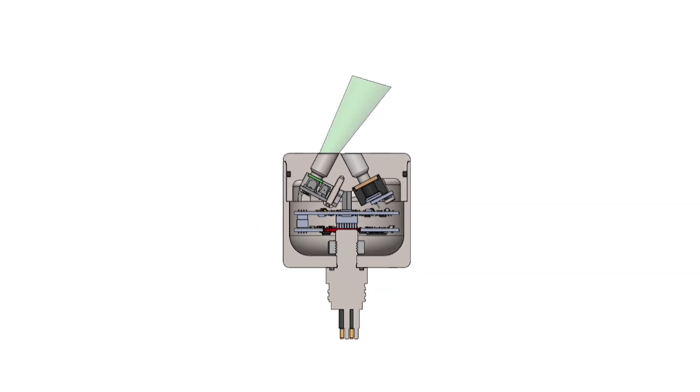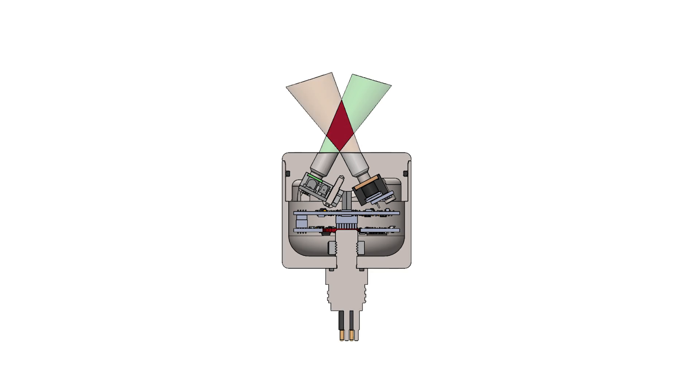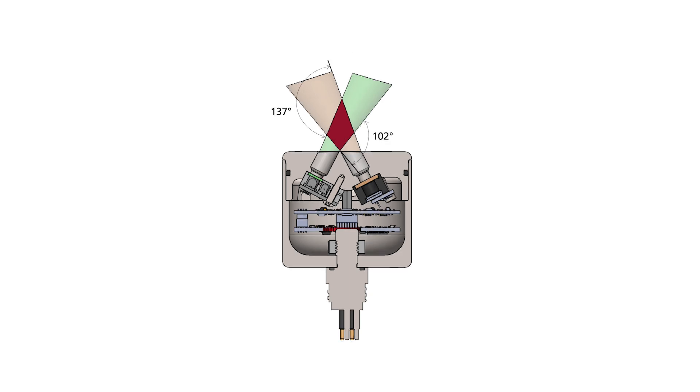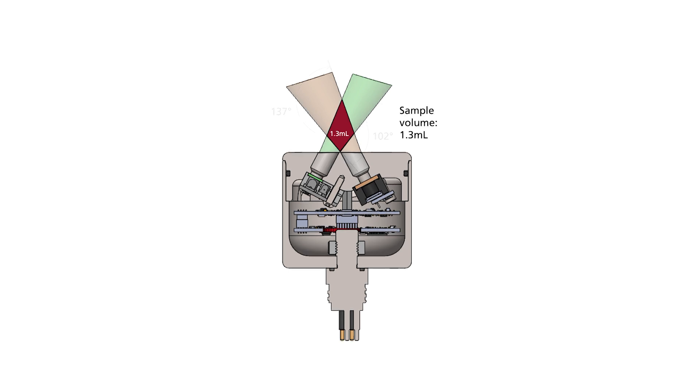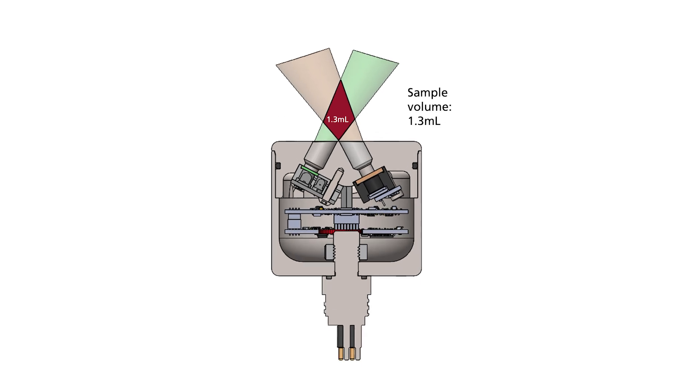The optical geometry was designed such that the chief ray from the LED intersects with the centerline of the photodiode at 120 degrees. The full field of view from the LED and the photodiode is such that we're sensitive to light scattering from 102 to 137 degrees. This creates a sample volume of 1.3 milliliters.